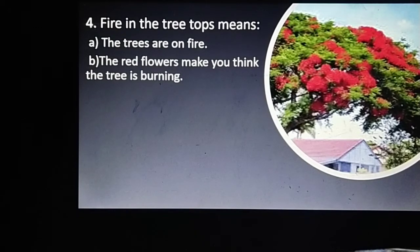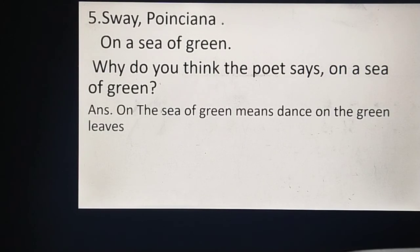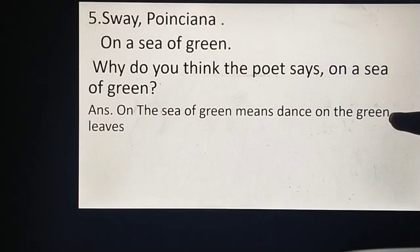Now we have completed four question answers. Let's move to the next question. Sway poinciana on a sea of green. Why do you think the poet says on a sea of green? What do you think the poet meant by saying swaying on a sea of green? You need to tell me the meaning, which I explained in the poem. So hurry up, be quick, give me your answer. Well done. Here's our answer: on a sea of green means dance on the green leaves.